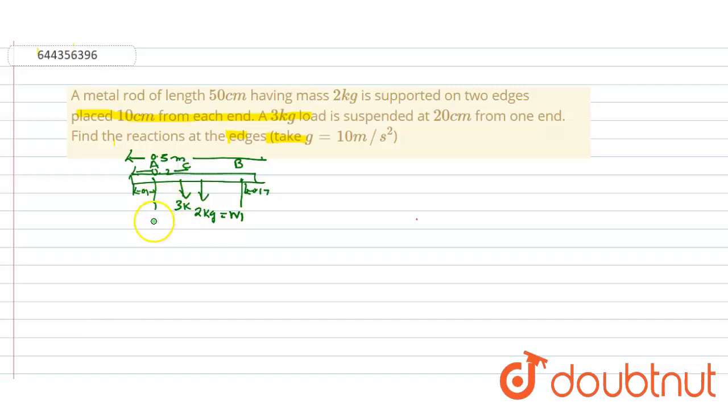So we have to find the reactions RA and RB. So we know W1 is equal to 2 kg into 10. G is given as 10, so it's 20 newtons. And what is W2? W2 is 3 kg into 10, that is 30 newtons.